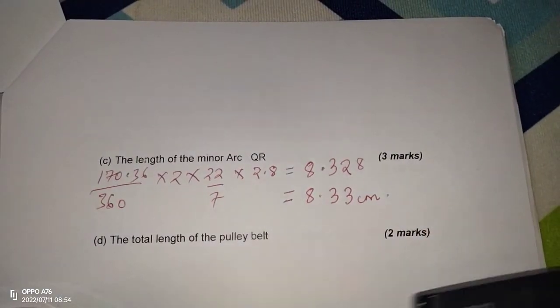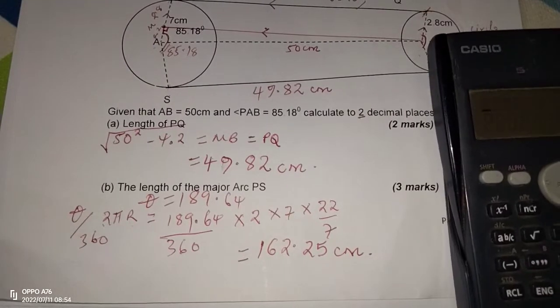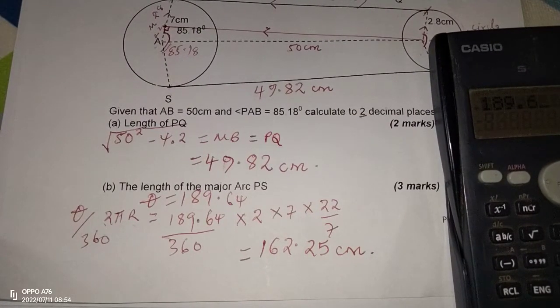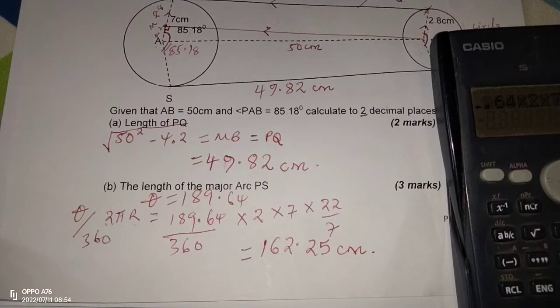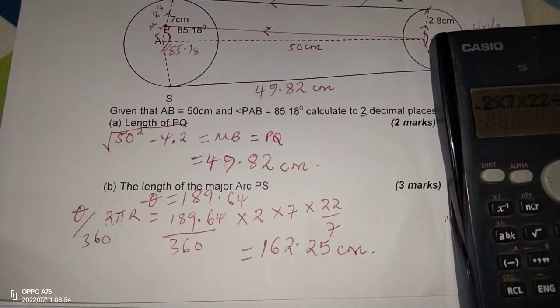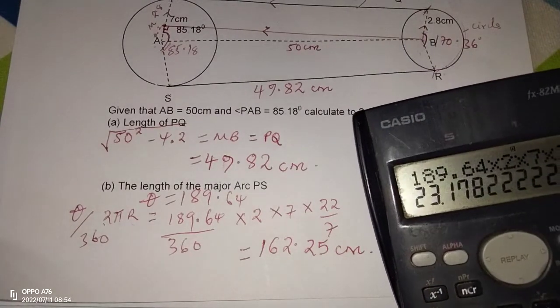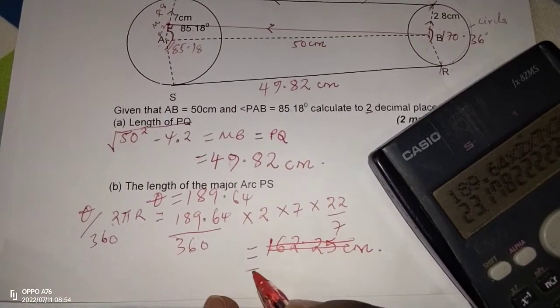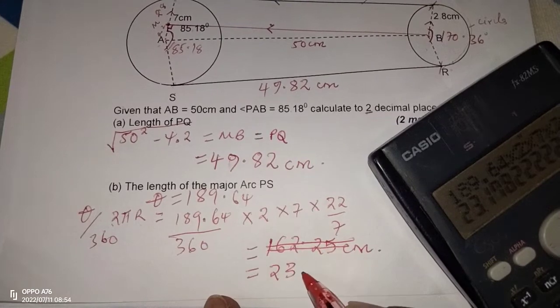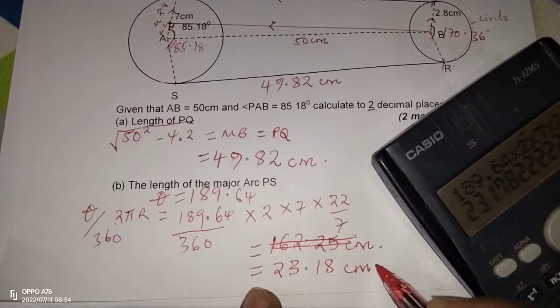Then finally, the total length of the belt. Total length of the belt. Let me just confirm the length of the major arc on the other side. Whereby we had 189.64 multiplied by 2 times 7 times 22. Then we divide by 360 multiplied by 7. This is a length of 23.18. So there was an error here in the computation. It should be 23.18 instead of 162.25 to 2 decimal places centimeters.